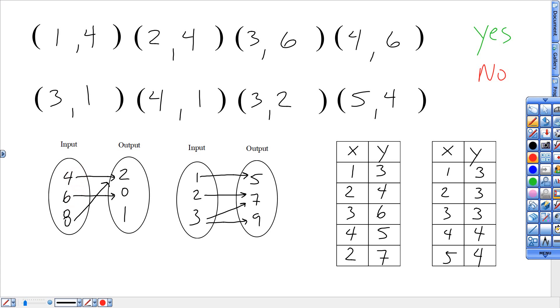So again, look at these. I want you to identify which is yes a function showing every input, only one output. And then which is not a function showing an input spitting out two different answers.